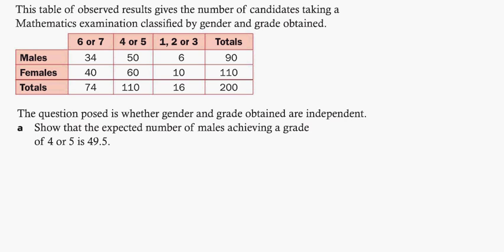The table of observed results gives the number of candidates taking a mathematics examination classified by gender and grade obtained. So you have males and females, you have 6 or 7, 4 or 5, 1, 2, or 3. You have 90 males, 110 females, 200 total. The question poses whether gender and grade obtained are independent. That's why you do a chi-square test to test for dependency.